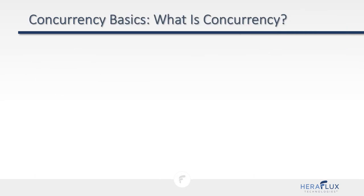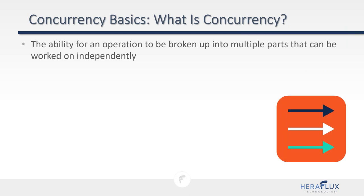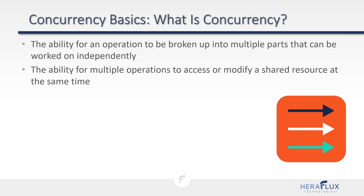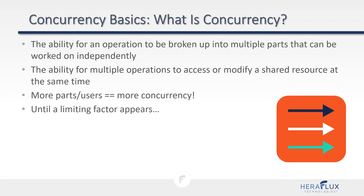What is concurrency? Something that's concurrent has the ability for an operation to be broken up into multiple parts that can be worked on independently — they're going on concurrently. It's also the ability for multiple operations to access or modify a shared resource at the same time. A higher degree of concurrency is great, until a limiting factor appears — typically a resource-bound problem.